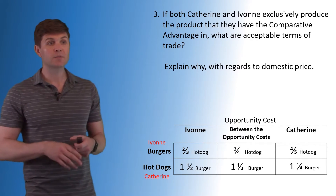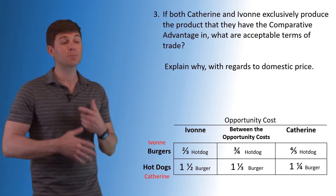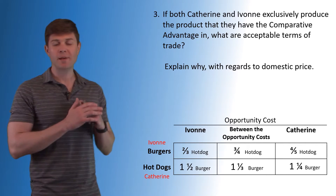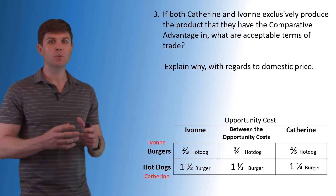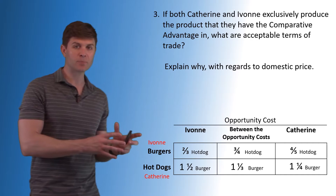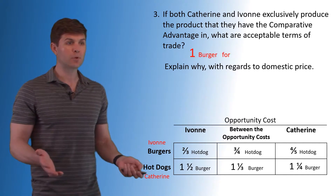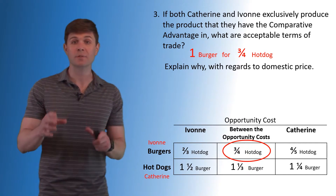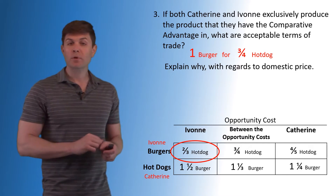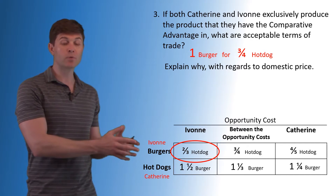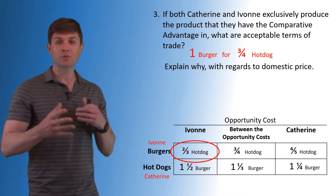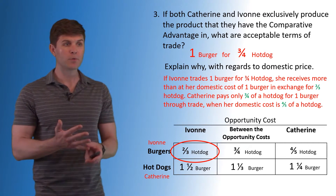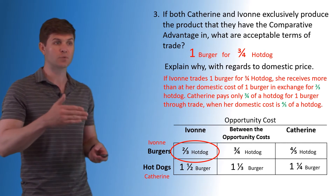If both Catherine and Yvonne exclusively produce the product they have the comparative advantage in, what are acceptable terms of trade? And explain why with regards to domestic price. The first part is something you'd see on an FRQ. I'll give you an answer so you understand regarding domestic cost — why they choose to trade under some circumstances and not others. One burger in exchange for three-quarters of a hot dog does fall between those terms of trade. Explaining why: Yvonne's opportunity cost of producing one burger is two-thirds of a hot dog. She could easily give up one burger and get two-thirds of a hot dog herself. So in terms of trade, she needs to receive more than that, otherwise she can do it herself. Her domestic price is two-thirds of a hot dog. If Yvonne trades one burger for three-quarters of a hot dog, she receives more than her domestic cost.